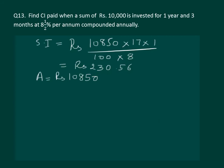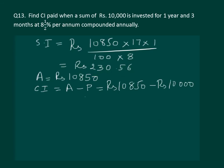To calculate the total interest for one year and three months, we also need the compound interest for the first year. The compound interest equals the amount minus the principal: rupees 10,850 minus rupees 10,000, which gives us rupees 850.